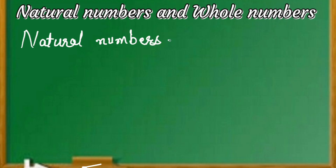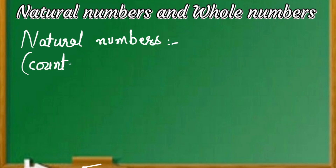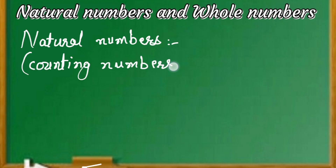Natural numbers are also called counting numbers. They are called counting numbers because when we start counting, we start from one. So natural numbers include numbers from one: one, two, three, four — these are all called natural numbers or counting numbers, and they increase by one each time.